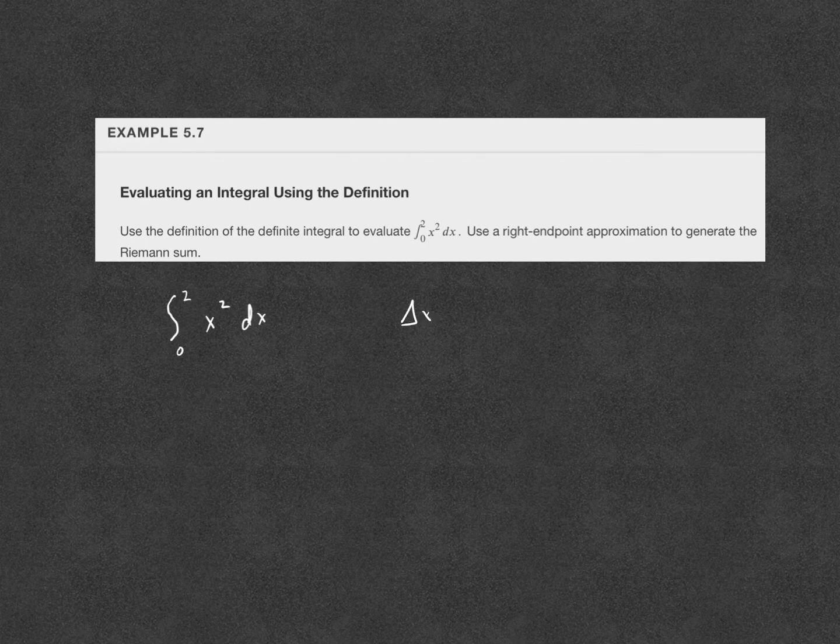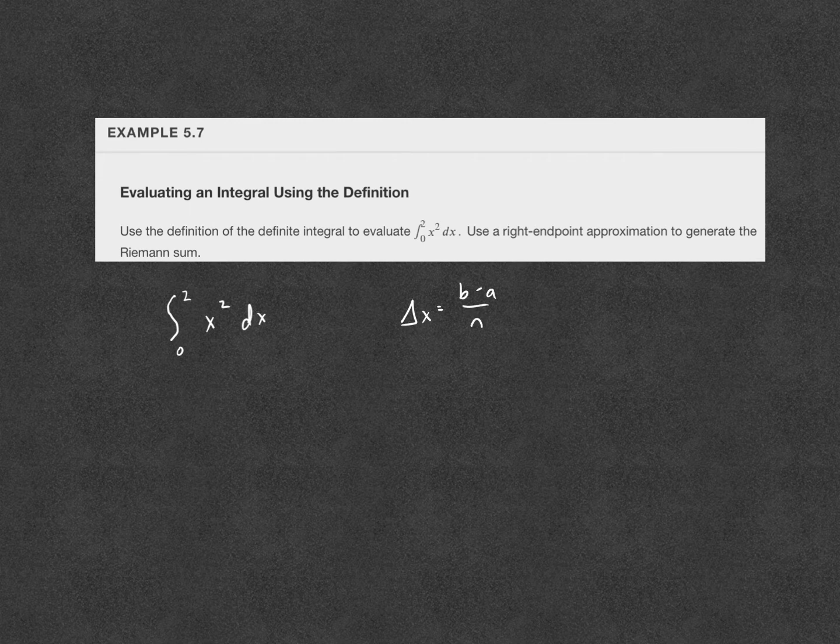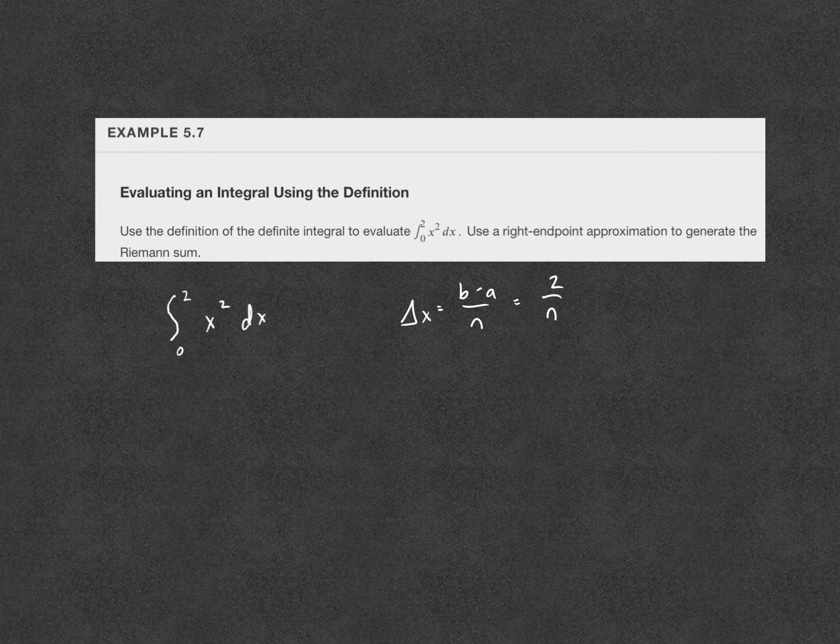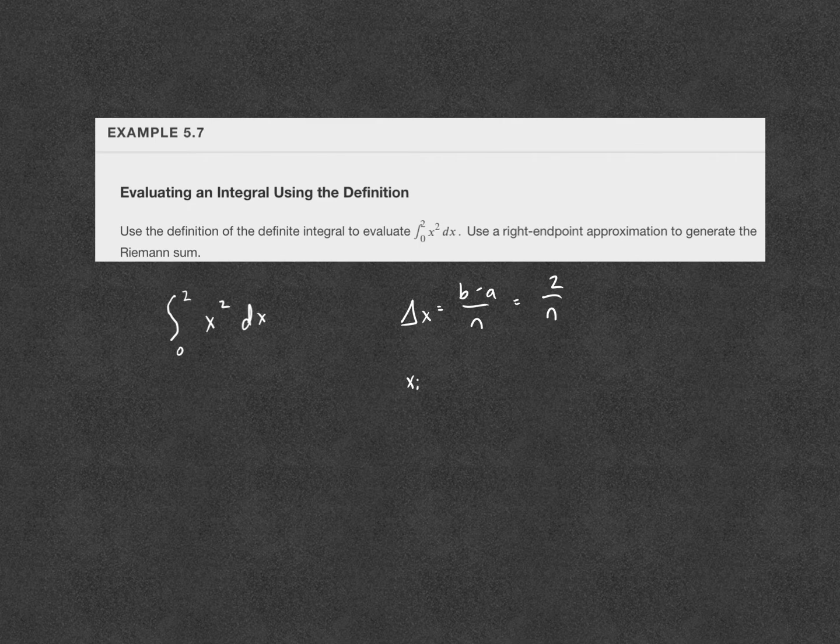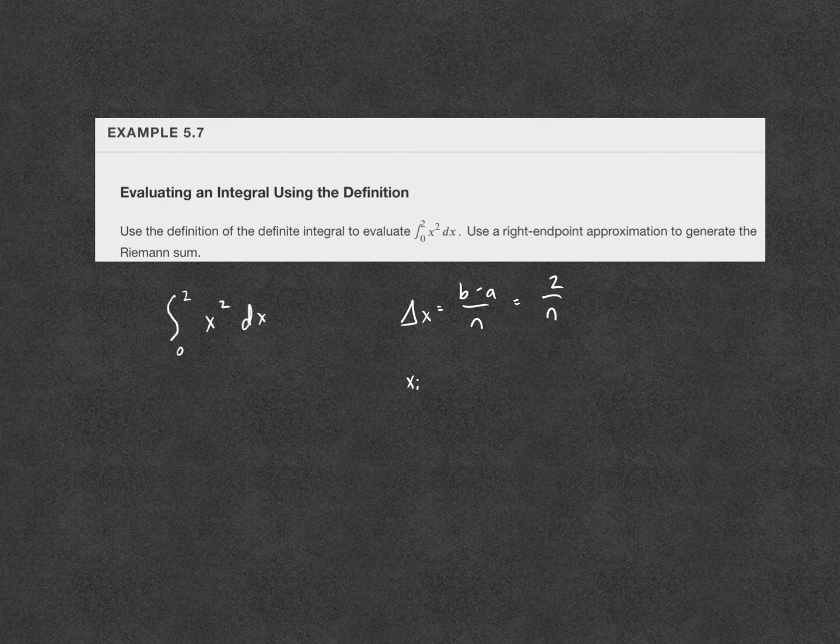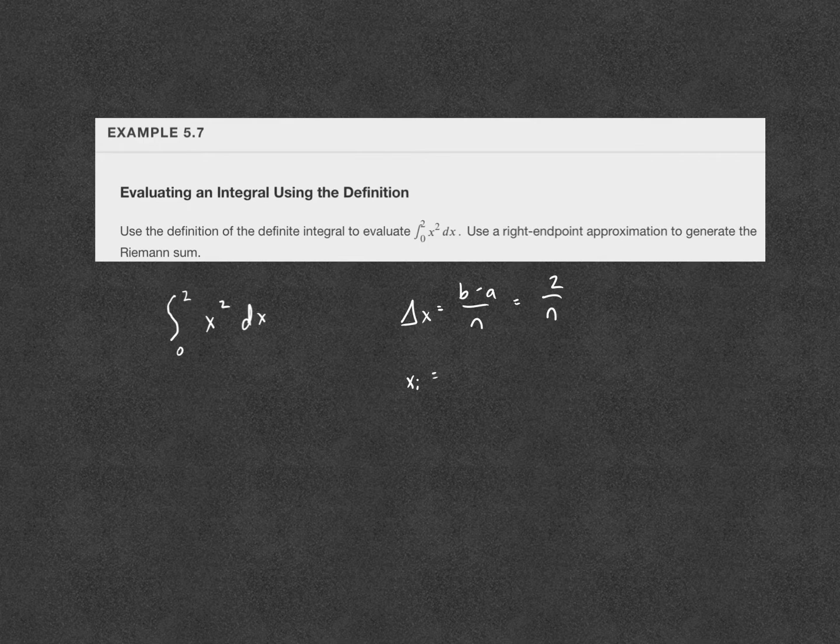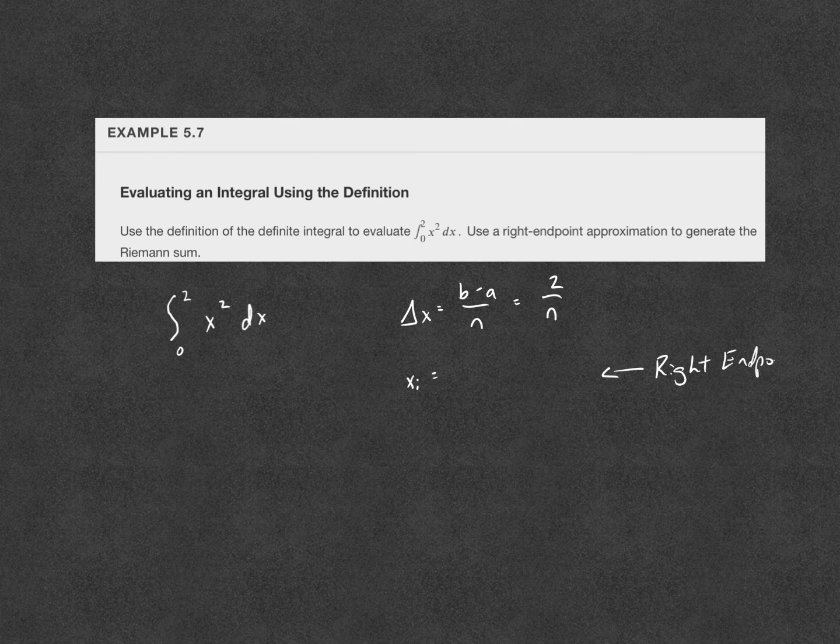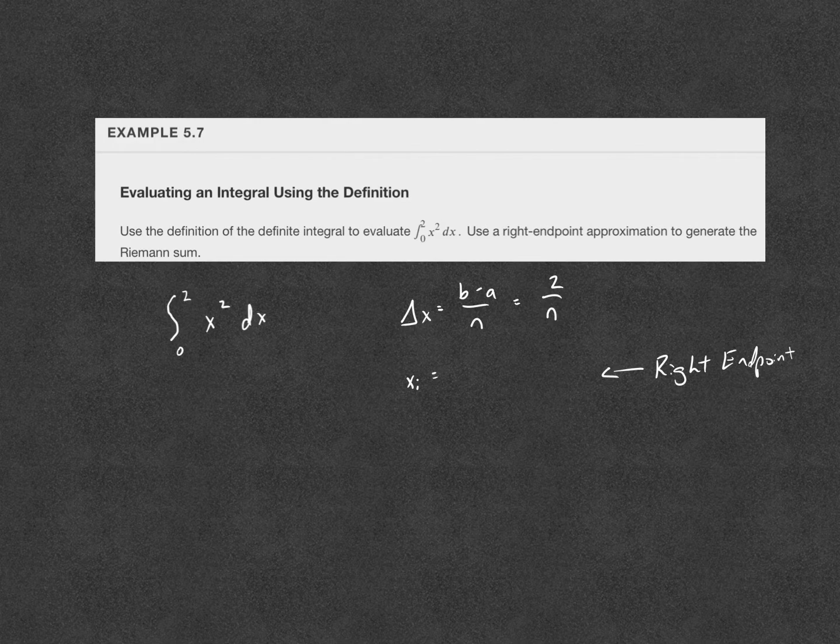Our delta x, the width of each of our rectangles has always been b minus a over n. In this case, it's 2 minus 0 over n, and we're going to leave the n there representing as many rectangles as we want within our region. The next step is going to be to find our right endpoint. If you want to look in OpenStax, that will show you where the right endpoint formula comes from, but you're not going to see one like this on the homework, so I'm just going to give you the result.